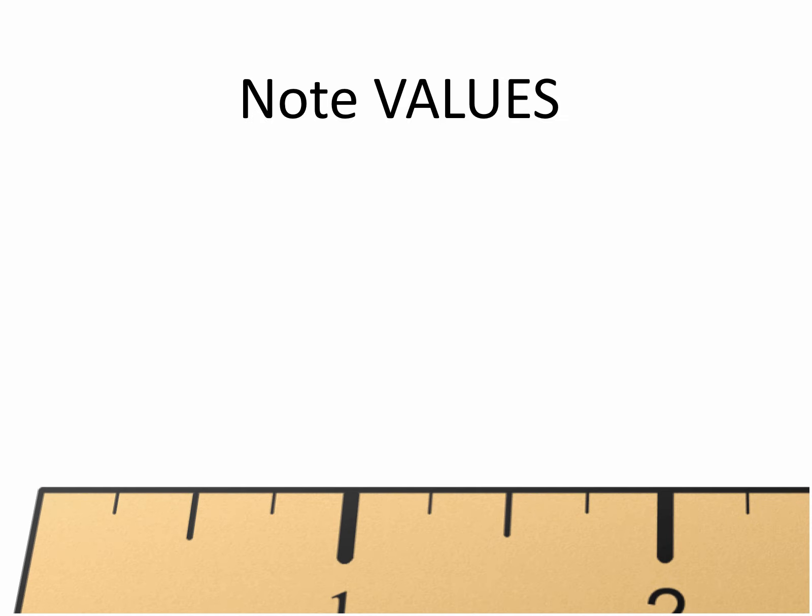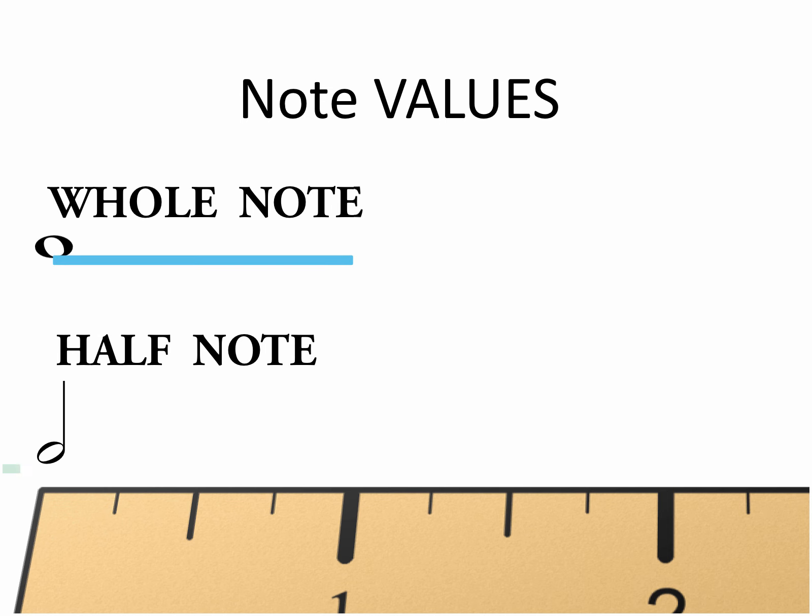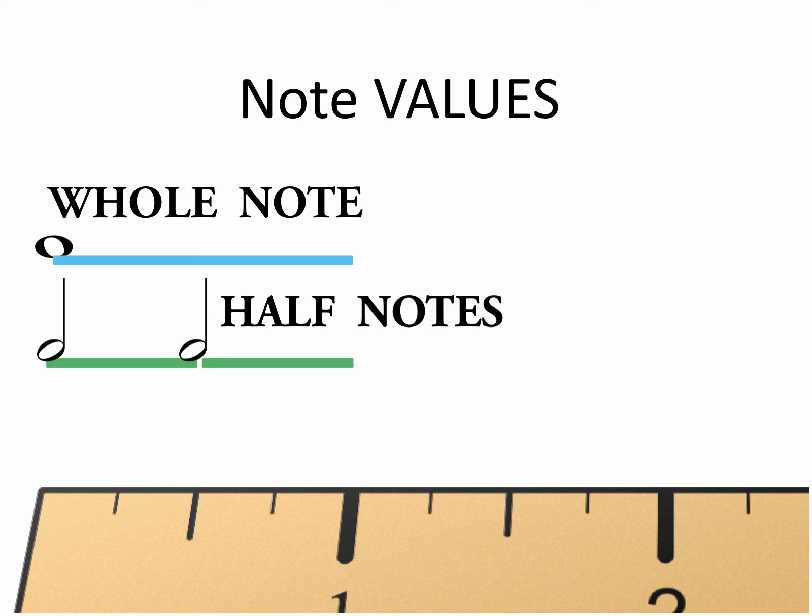Another way to represent note values is a ruler or timeline. If the whole note fills a unit, then the half note will fill half a unit, and it will take a second half note to complete that unit. And each quarter note will fill a quarter of the unit.